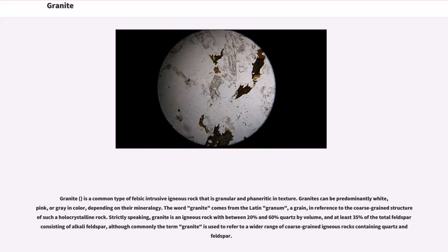Granite is a common type of felsic intrusive igneous rock that is granular and phaneritic in texture. Granites can be predominantly white, pink, or gray in color, depending on their mineralogy. The word granite comes from the Latin granum, meaning a grain, in reference to the coarse grain structure of such a holocrystalline rock.